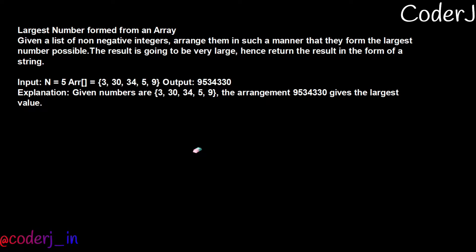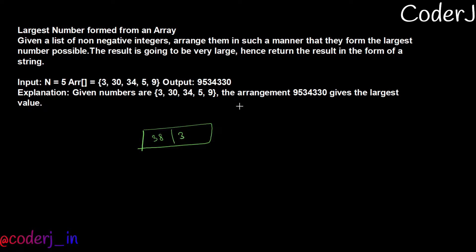We have a beautiful example and we will be using this to formulate a solution, but let me draw up a small example. Say we have an array of size 2 with only two elements: 38 and 3. As per the question, the answer you should return is 383. We have two elements and we have to arrange them so that when you convert them to strings and append them, you get the largest number possible. In this case it's 383 — the two permutations are 383 and 338, and 383 is bigger.